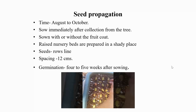Seeds usually become available for sowing from August to October. The seeds lose their viability within one week after harvest under normal conditions, so it is necessary to sow them immediately after collection from the tree. The seeds can be sown with or without the fruit coat. Raised nursery beds are prepared in a shady place and seeds are sown in rows with a spacing of about 12 cm. Seeds begin to germinate in 4 to 5 weeks after sowing.